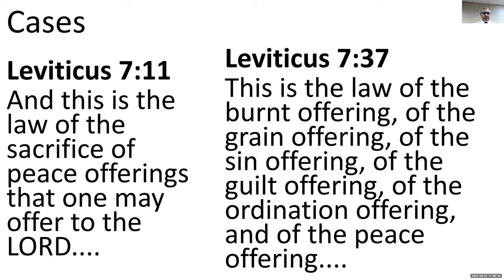Leviticus 7:11 gives the law of the sacrifice of peace offerings — those are voluntary. And Leviticus 7:37 is the concluding statement covering the burnt offering, grain offering, sin offering, guilt offering, ordination offering, and peace offering. Chapters 6 and 7 are all the instructions for the priests about how to perform these offerings — what is to be accepted and how it is to be handled.